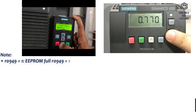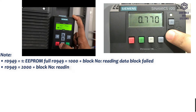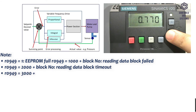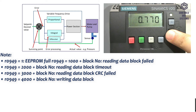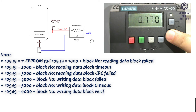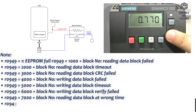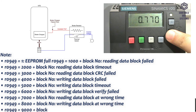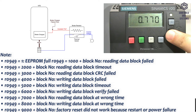Note: R0949 equals 1: EPROM full. R0949 equals 1000 plus block number: reading data block failed. R0949 equals 2000 plus block number: reading data block timeout. R0949 equals 3000 plus block number: reading data block CRC failed. R0949 equals 5000 plus block number: reading data block timeout. R0949 equals 6000 plus block number: writing data block verify failed. R0949 equals 8000 plus block number: writing data block at wrong time. R0949 equals 9000 plus block number: factory reset did not work because of restart or power failure.